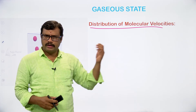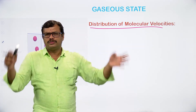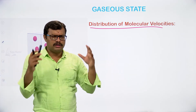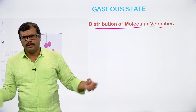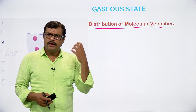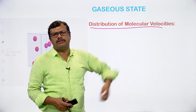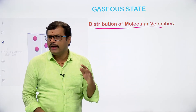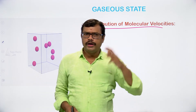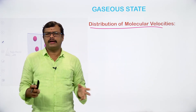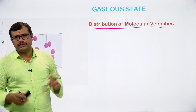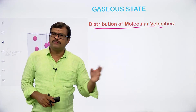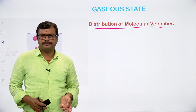When you look at the gas molecules, a gas is made up of so many tiny particles moving randomly in all possible directions — there is no particular direction. They will have different velocities; all gas molecules will not have the same velocity. Therefore, we calculate the average kinetic energy for the gas molecules, because the gas molecules are moving with different speeds.